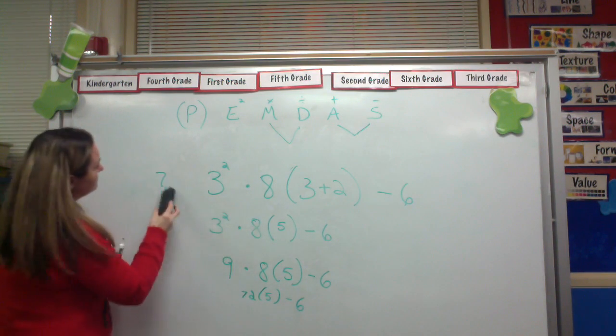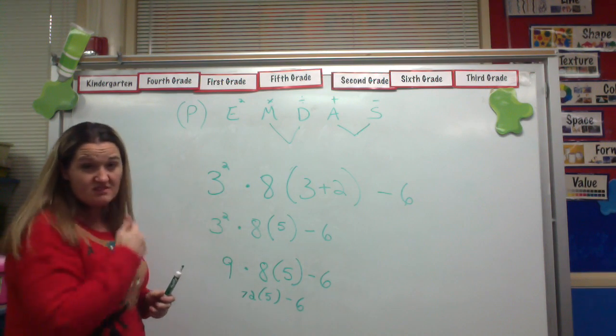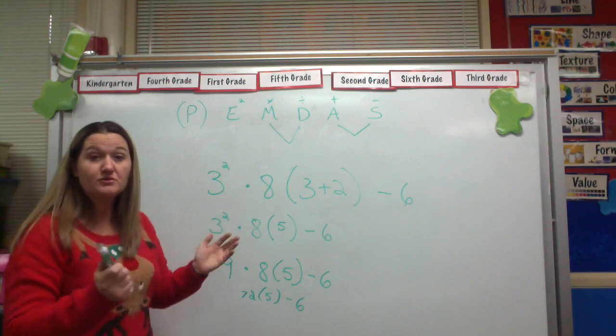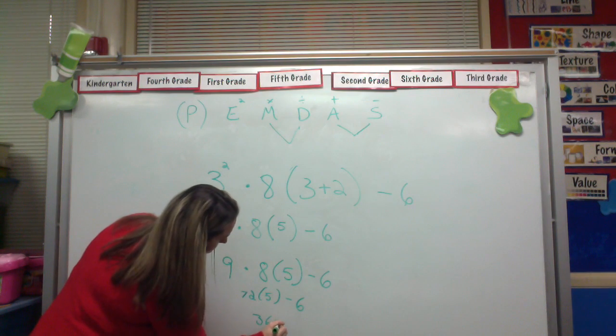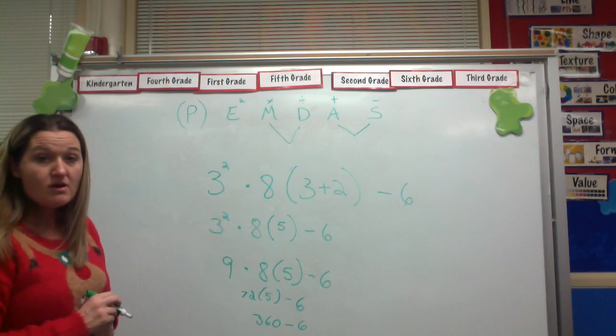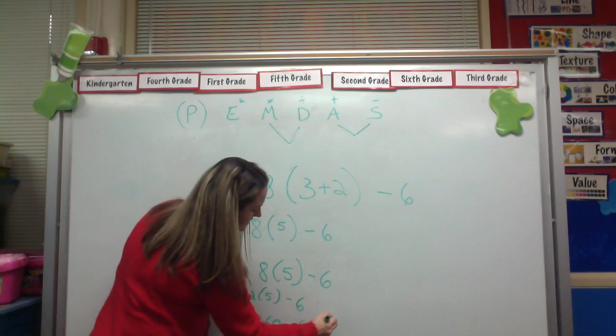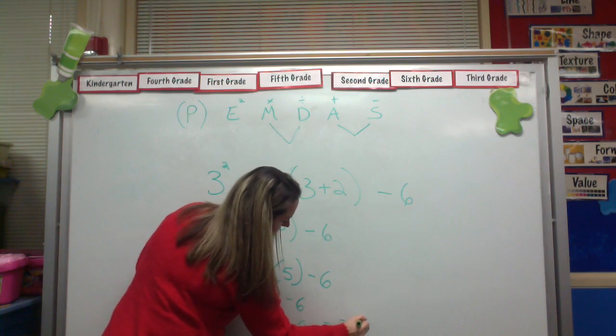72 times 5. You know what? I'm going to use the distributive property to help me with this. 72 times 5. That's the same thing as 5 times 70. 350 times 5 times 2 is 360. So that's 360 minus 6. And now I'm ready for my last step, which is a subtraction. So my answer to this problem is 354.